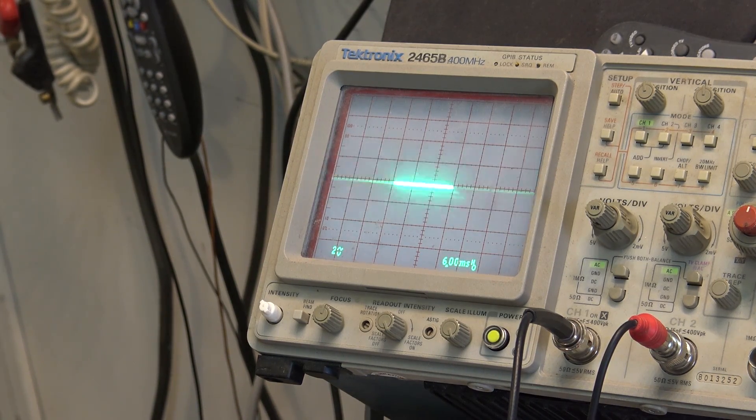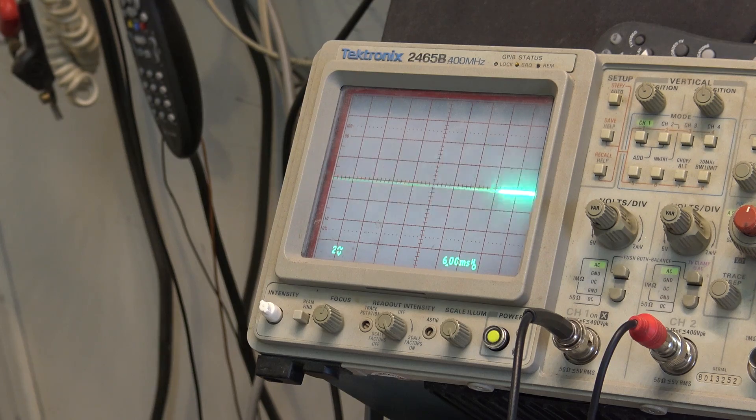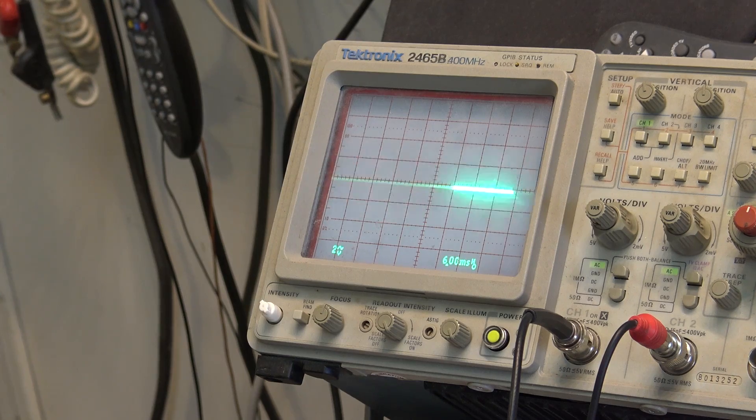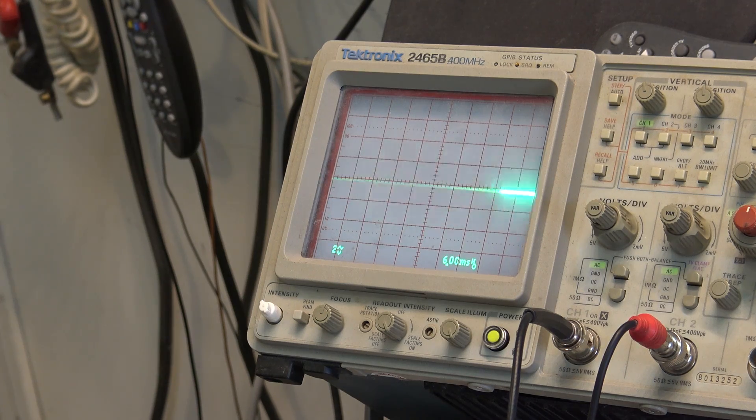With the short bursts of power I've been putting through this thing, I've got this 50 watt resistor to the point where I can't even touch it, it's so hot. So we know that this amp is putting out power.